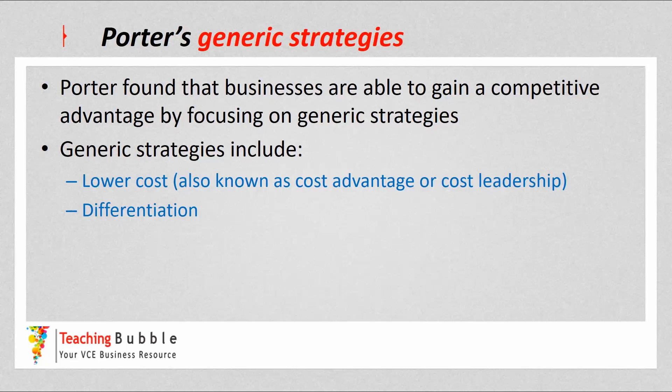So Porter's theory — it is going to be challenging to summarize 500 pages of Porter's book into a few minutes, so this video may be a little bit longer than previous videos. Porter found that businesses are able to gain a competitive advantage by focusing on what he calls generic strategies. The two generic strategies listed in our study design are the lower cost strategy and differentiation.